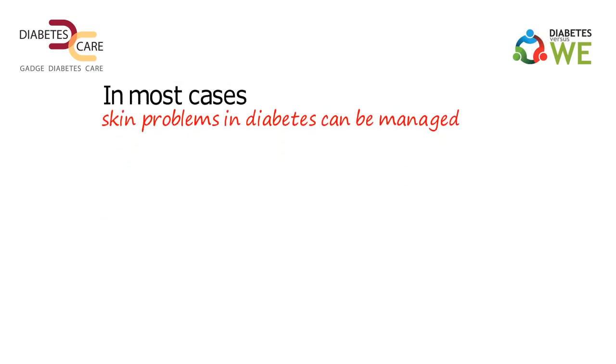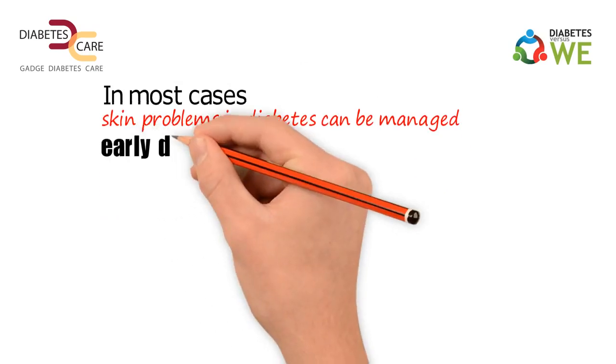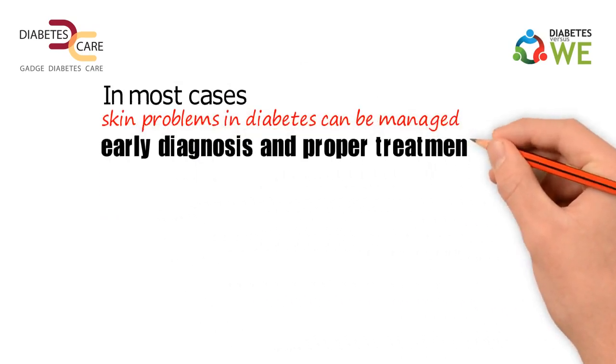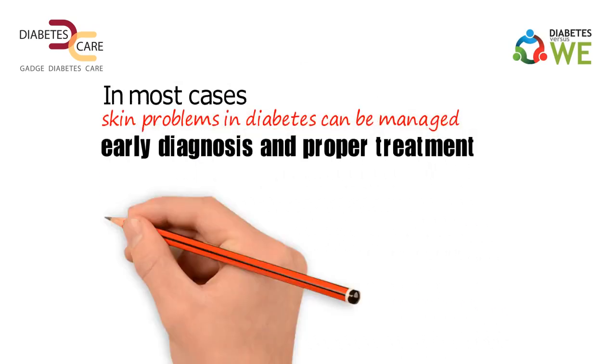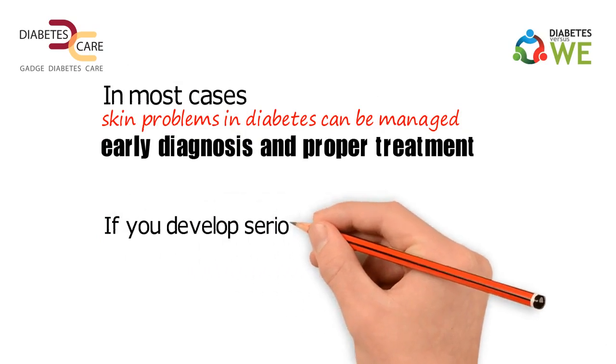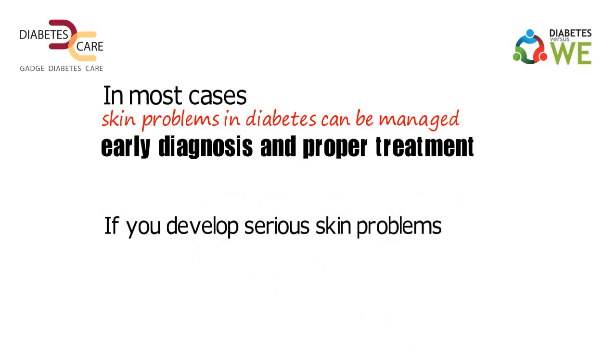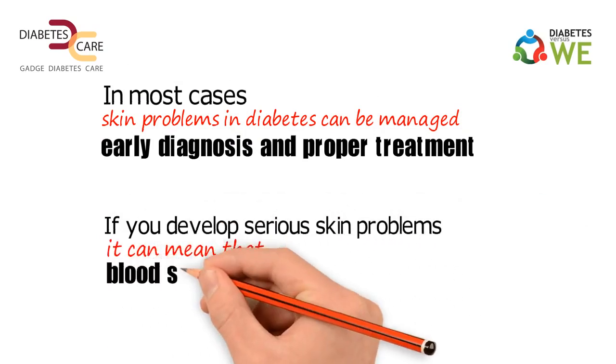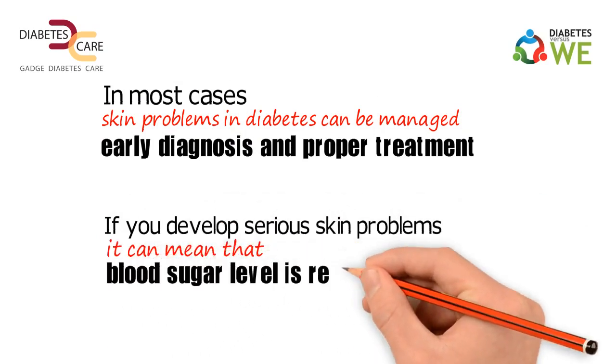In most cases, skin problems in diabetes can be managed with early diagnosis and proper treatment. If you develop serious skin problems, it can mean that your blood sugar level is remarkably high.